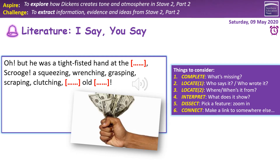This should be a fairly familiar task. On the left-hand side we have a quotation, and if it's missing words, there's a visual prompt. On the right-hand side there are six prompts: what's missing, who says it, who wrote it, where is it from, what does it show, pick out a feature and zoom in on something, and connect it — make a link to somewhere else. Give yourself 30 seconds, do as many as you can, then press play and I'll run through some answers.